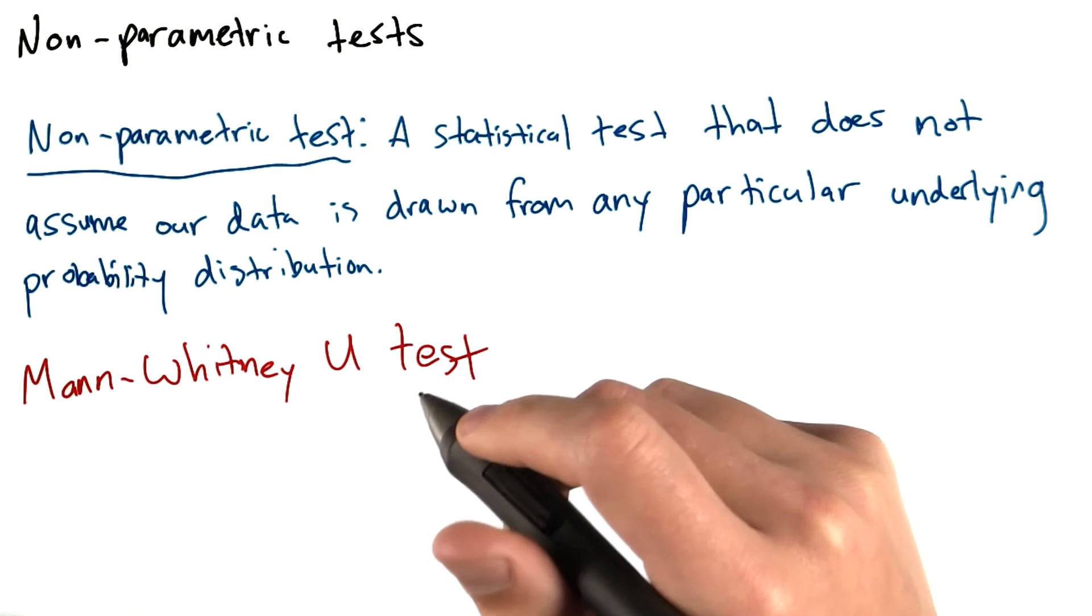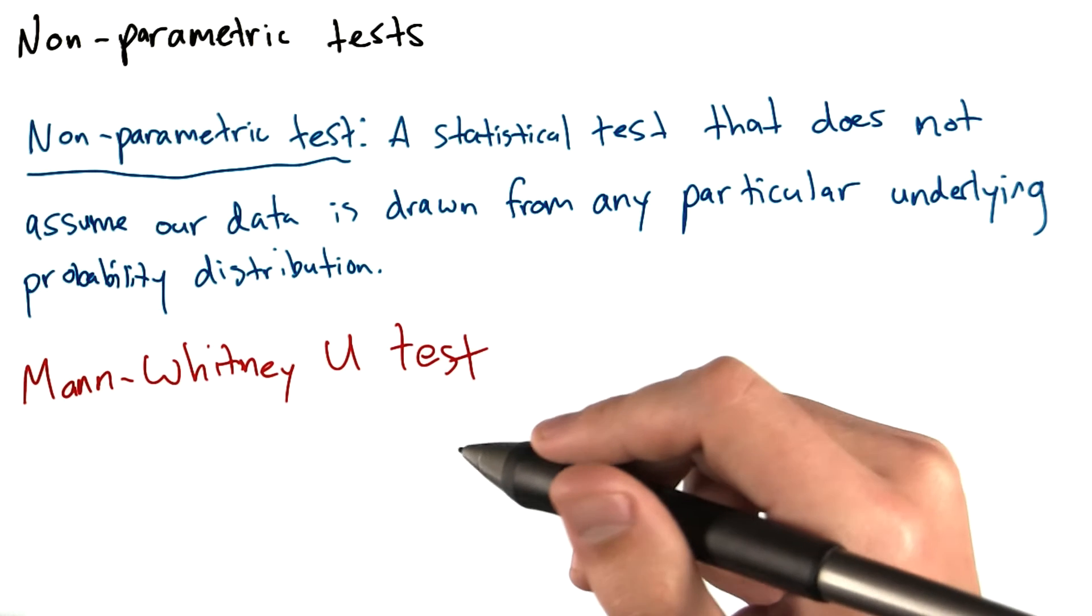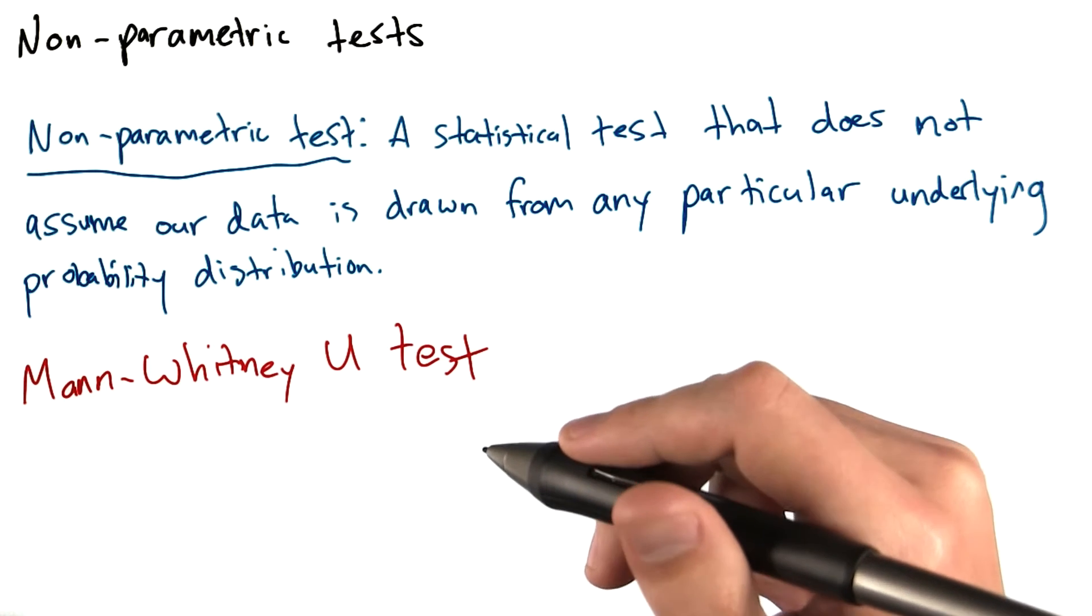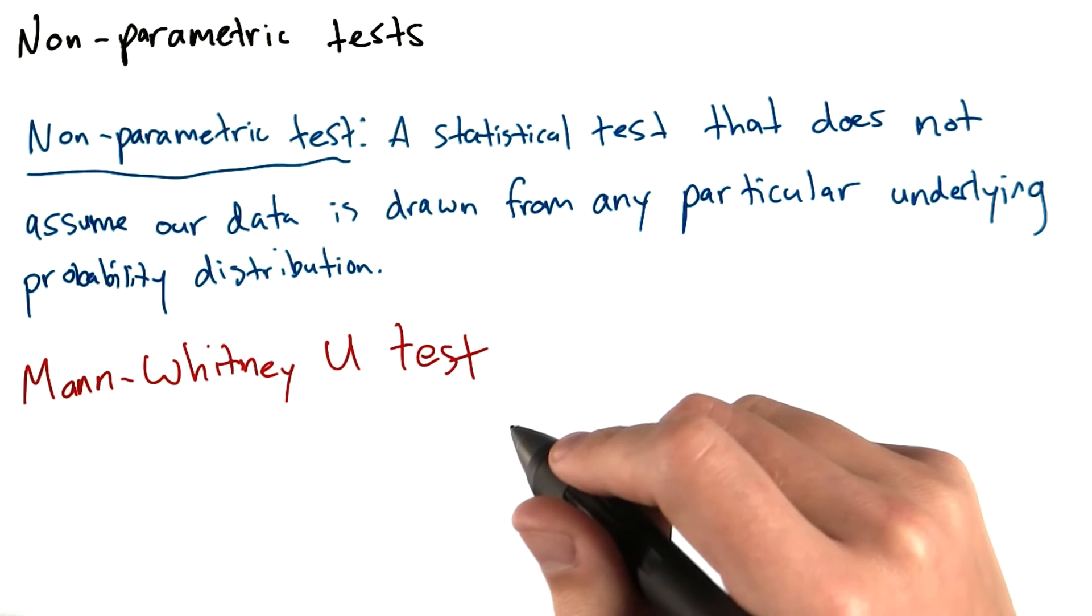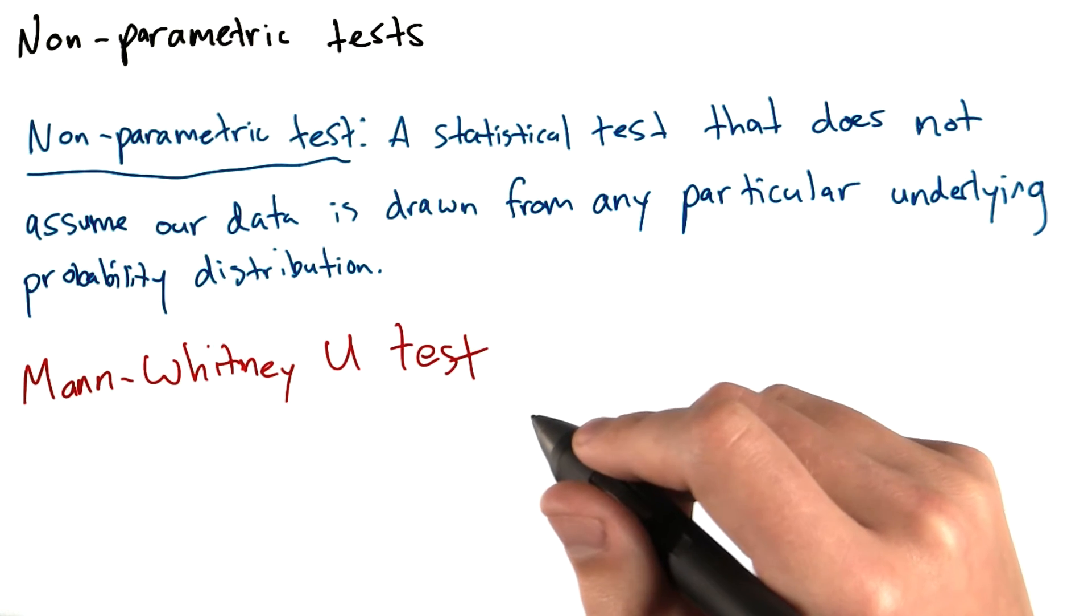One such test is the Mann-Whitney-U test, which is also sometimes referred to as the Mann-Whitney-Wilcoxon test. This is a test of the null hypothesis that two populations are the same.